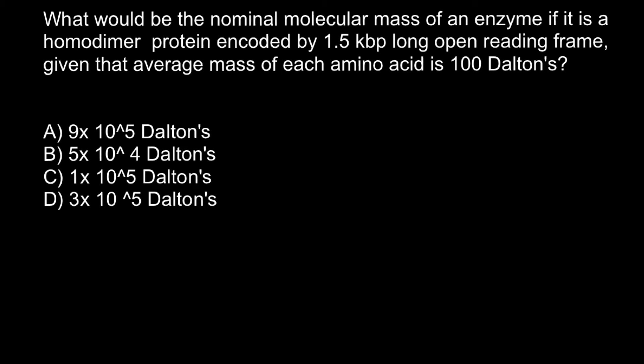Hello and welcome to Nikolay's genetics lessons. One of my subscribers from India sent me this problem: What would be the nominal molecular mass of an enzyme if it is a homodimer protein encoded by 1.5 kilobase pairs long open reading frame, given that the average mass of each amino acid is about 100 Daltons?